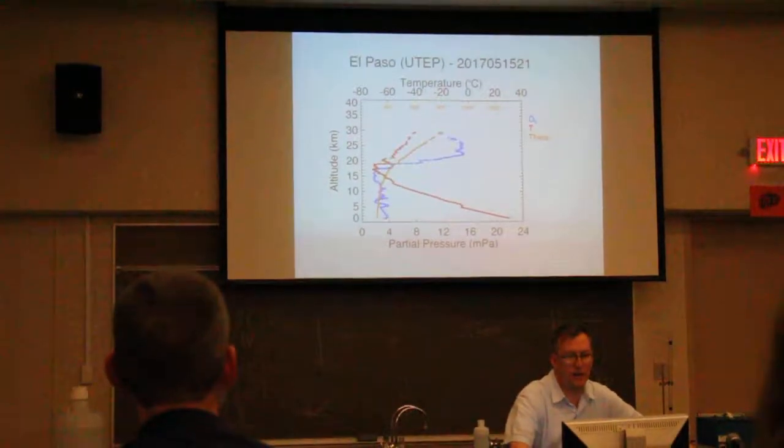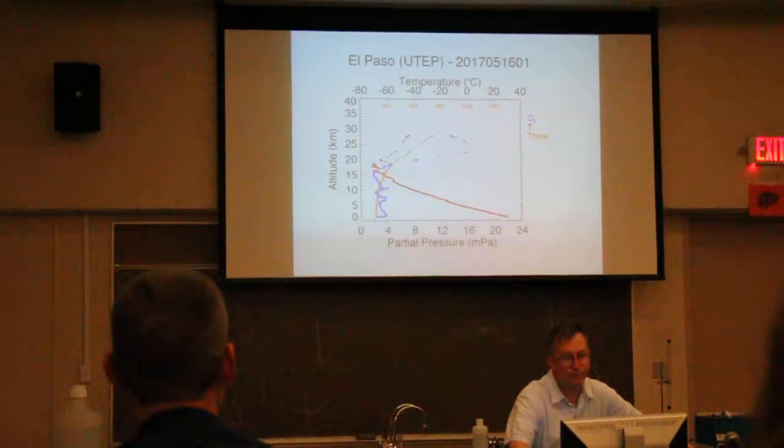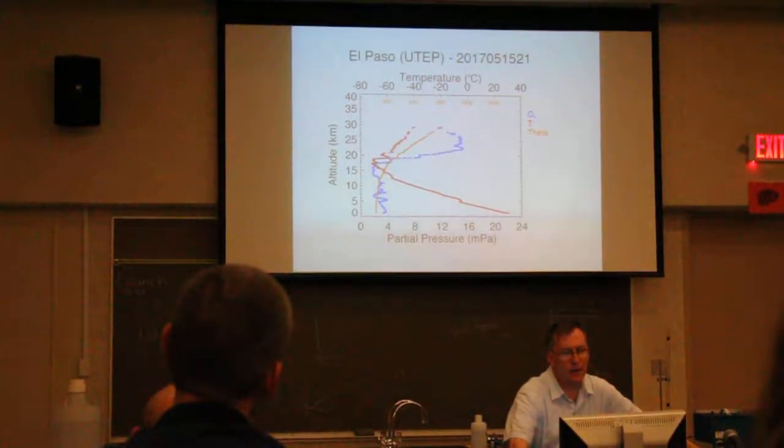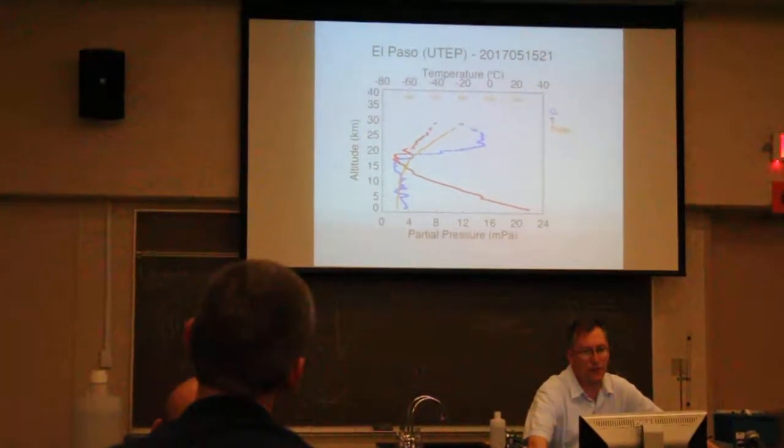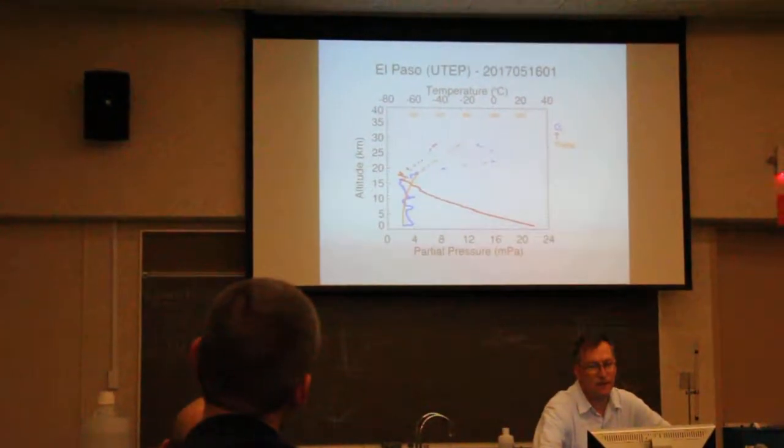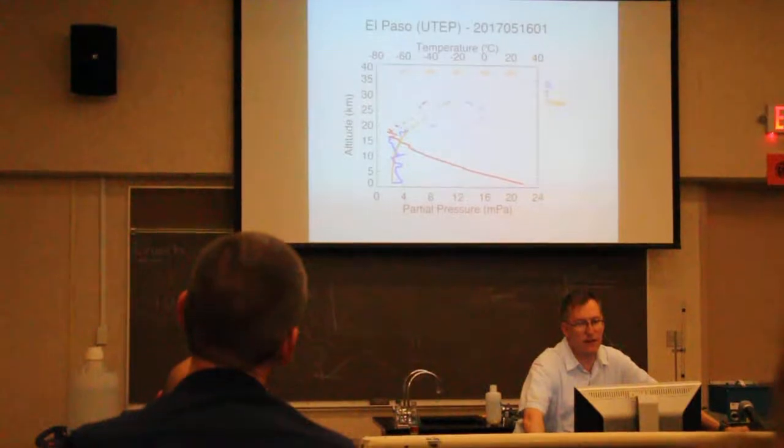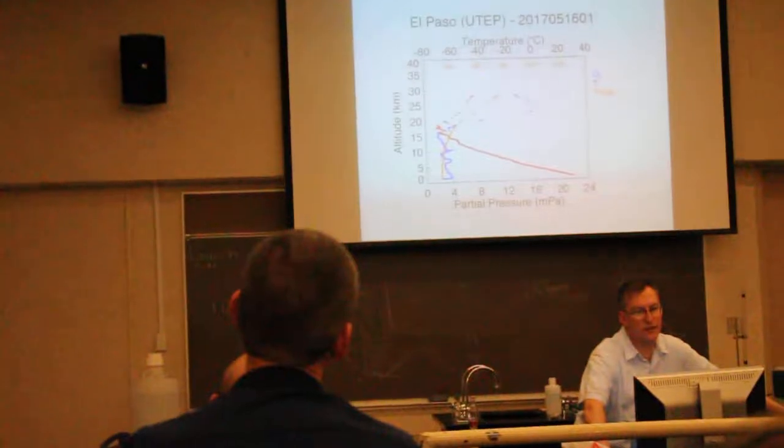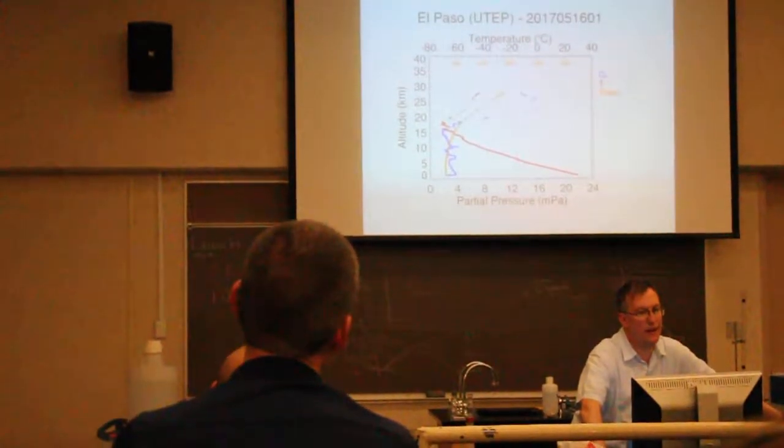The boundary layer height. What do you see going on with the boundary layer height? That's a pretty clear boundary layer right there at about five kilometers. Not as clear there. Temperature inversion is a little weaker, maybe a little higher.